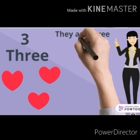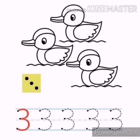What is this number? Number three. How many hearts? Let's count: one, two, three. There are three hearts. What is this number? Number three. How many dots are there? Let's count: one, two, three. There are three dots.